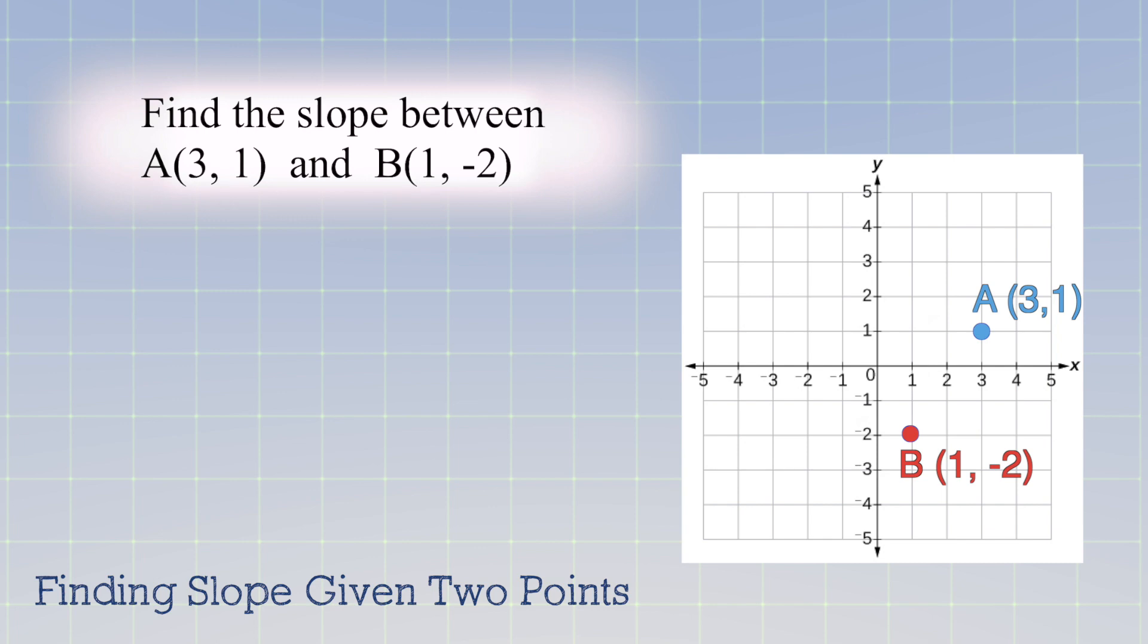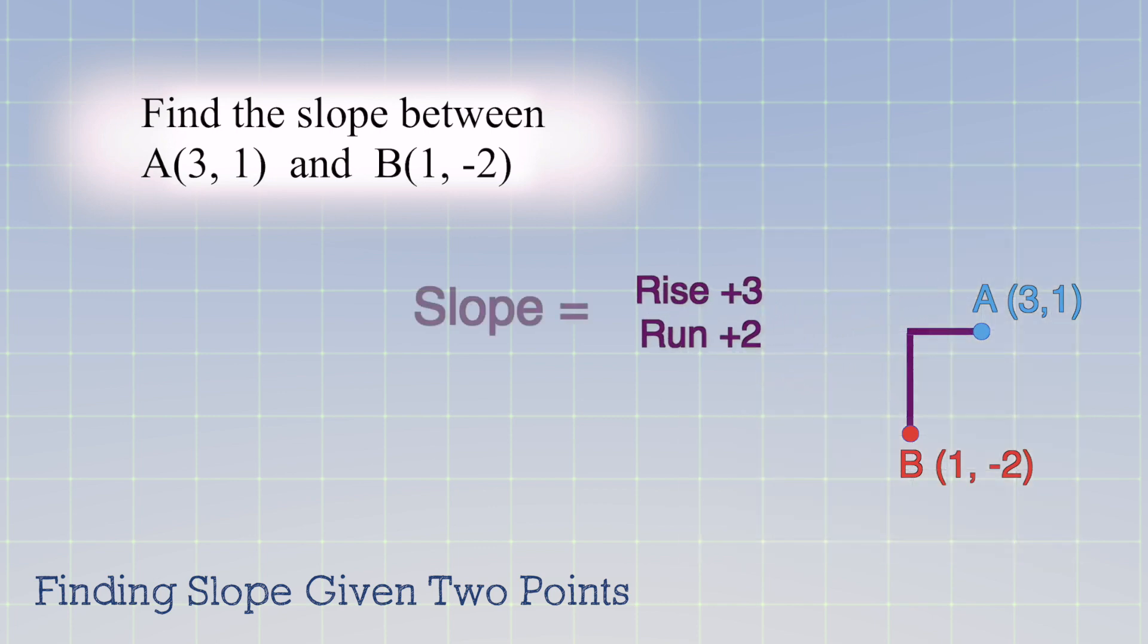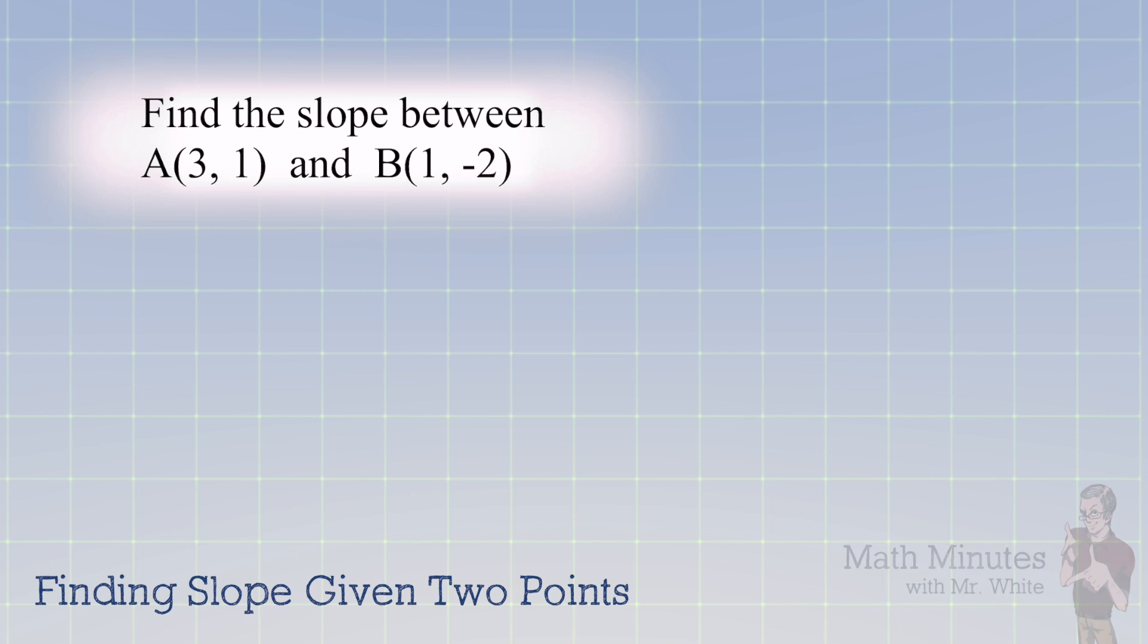We're going to find the slope between these two points. Now with the graph, of course, we could look at it and find the rise. We could find the run, and we can make the fraction, which is the slope. The slope is always rise divided by run. What if we don't want to graph it? However, how do we do this?